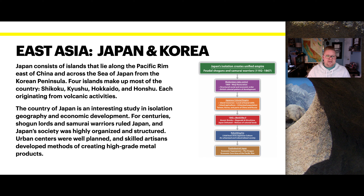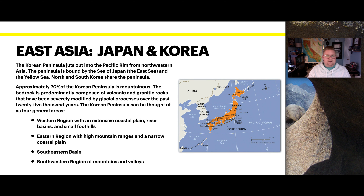Japan consists of islands that lie along the Pacific Rim, east of China and across the Sea of Japan from the Korean Peninsula. Four islands make up most of the country, each originating from volcanic activity. Japan is an interesting study in isolation, geography, and economic development. For centuries, shogun lords and samurai warriors ruled Japan, with a highly organized society, well-planned urban centers, and skilled artisans who developed high-grade metal products. Japan's history runs from isolation creating a unified empire (1192–1867), to modernizers taking control in 1868, then the Japanese colonial empire, World War II, a rebuilding era, and finally the post-industrial Japan we deal with today.